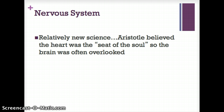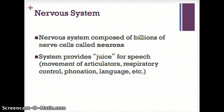Although we divide the nervous system into the central nervous system and the peripheral nervous system, in reality there is really only one coordinated system. It's a relatively new science — Aristotle used to believe the heart was the seat of the soul, so the brain was often overlooked. Now we are constantly learning new things about the brain.